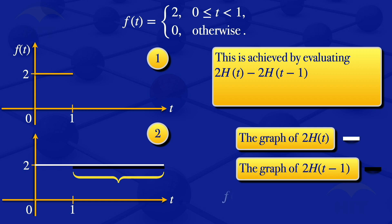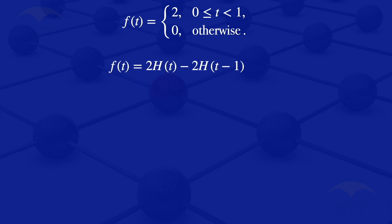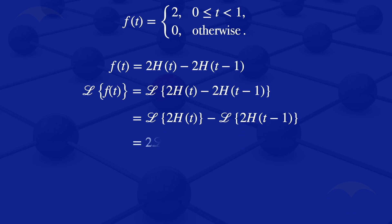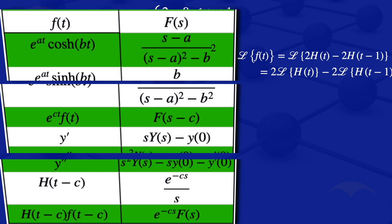So in this case, f of t equals 2h(t) minus 2h(t-1). By properties of Laplace transforms, the Laplace transform of f of t is the Laplace transform of 2h(t) minus 2h(t-1). We can factor out the 2 since it is a constant, giving us 2 times the Laplace transform of h(t) minus 2 times the Laplace transform of h(t-1).